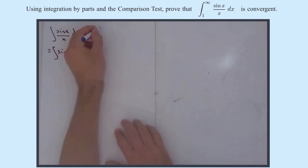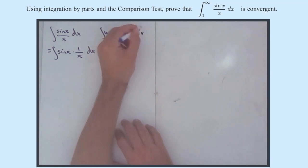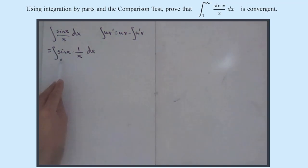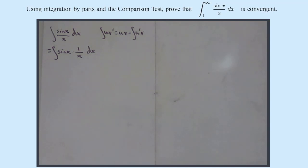Using integration by parts, remember: the integral of u·v' equals u·v minus the integral of u'·v. You get to make your decisions right at the start — what is u and what is v'? sin(x) doesn't change much either way: differentiating gives cos(x), integrating gives −cos(x). But 1/x is very different: integrating gives ln(x), whereas differentiating — writing it as x^(−1) — gives −x^(−2), which is −1/x².